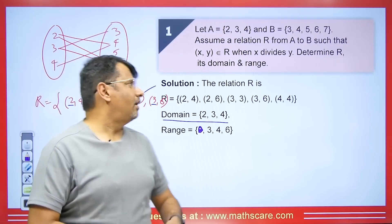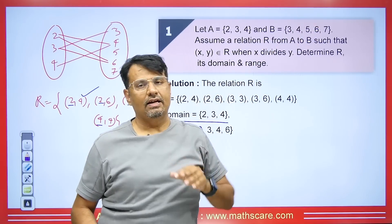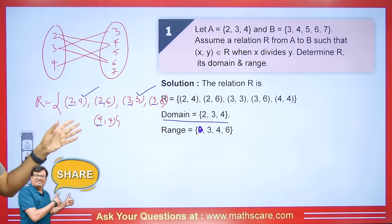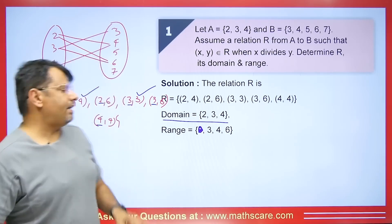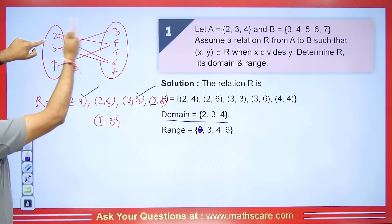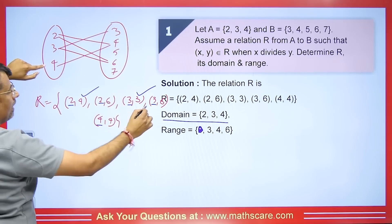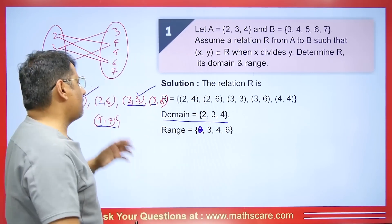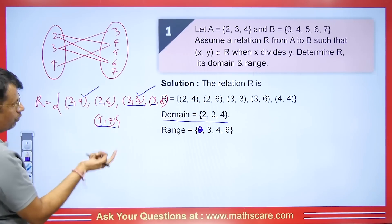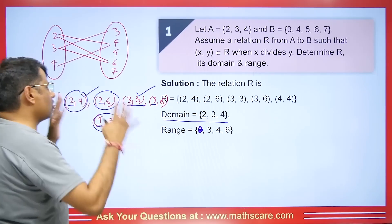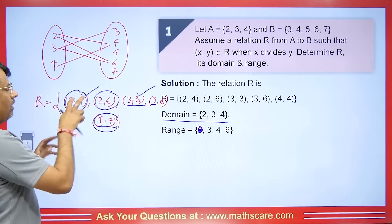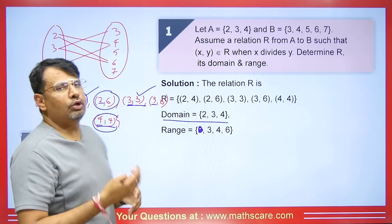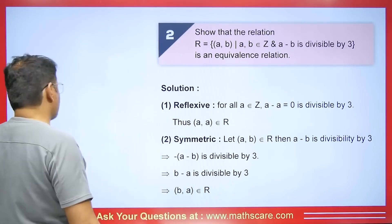The co-domain is {3, 4, 5, 6, 7}. Now, is this relation reflexive? To be reflexive, (2,2) should be in R, but it is not — so it is not reflexive. For symmetry, if (2,4) is there, then (4,2) should also be there; but it is not — so it is not symmetric. For transitivity, if (2,6) and (6,?) — since 6 is not in the domain, and checking (2,4) and (4,4) gives us (2,4) which is already there. The transitive property is satisfied.